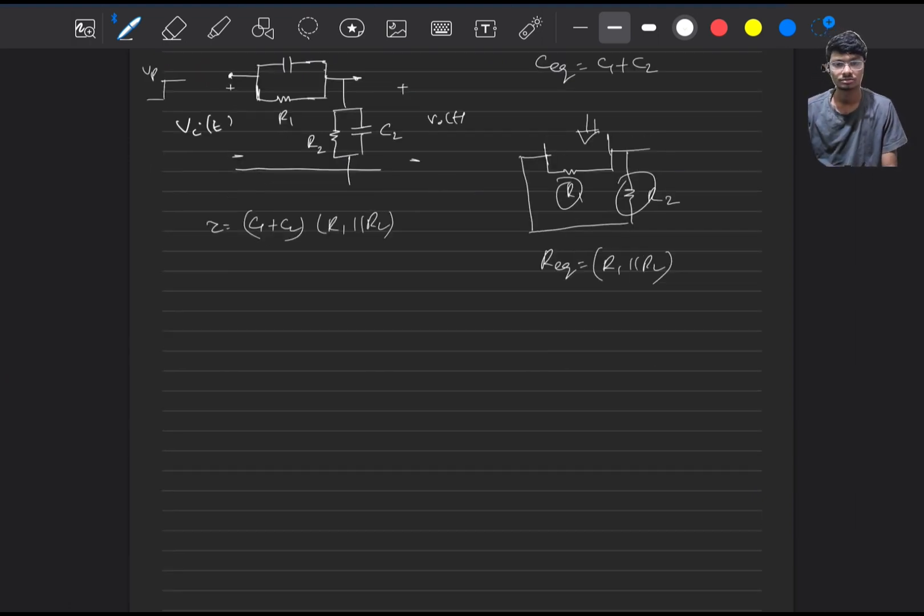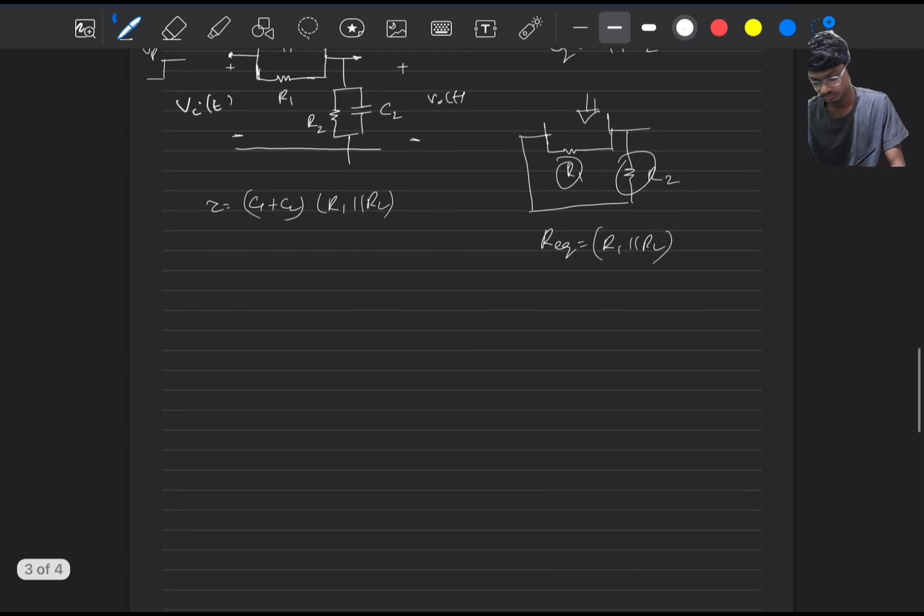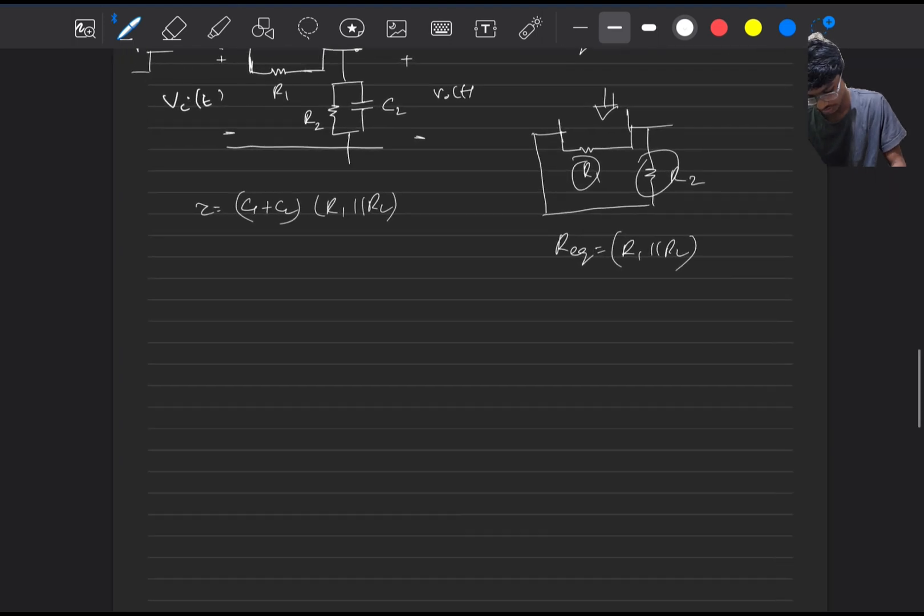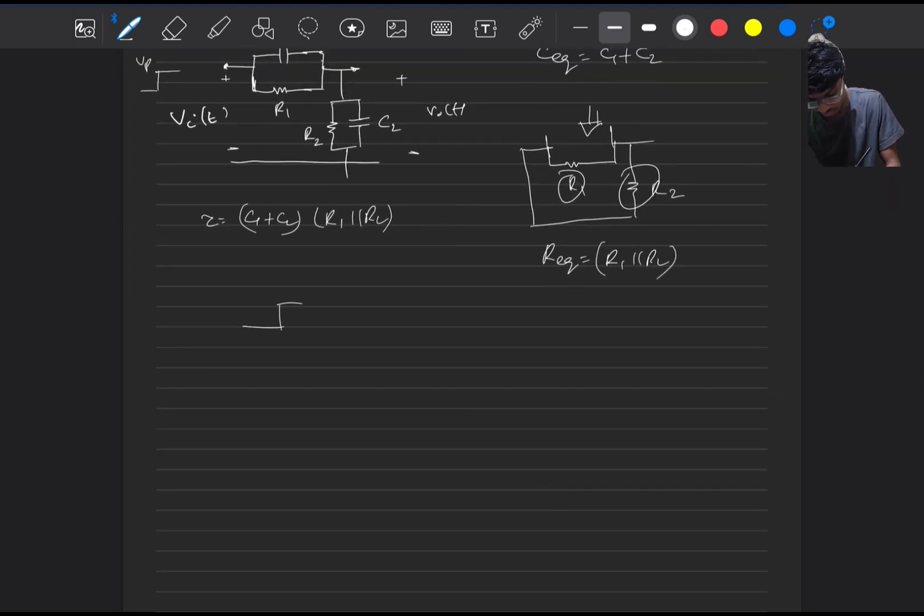Now we will calculate the output voltage waveform. For that we have to check for the initial and final conditions of the output voltage. Initially as there were no charges present in the capacitors, they will try to become short circuit. And there are resistances here. C1 and C2, R1 and R2. So as they are short, this is step voltage applied at t equals 0 plus of Vp. Now what will happen is this will become very low impedance across this R as these are short circuited.